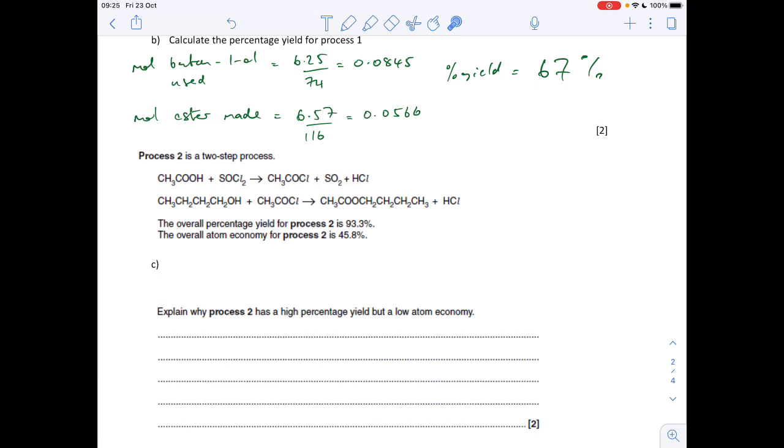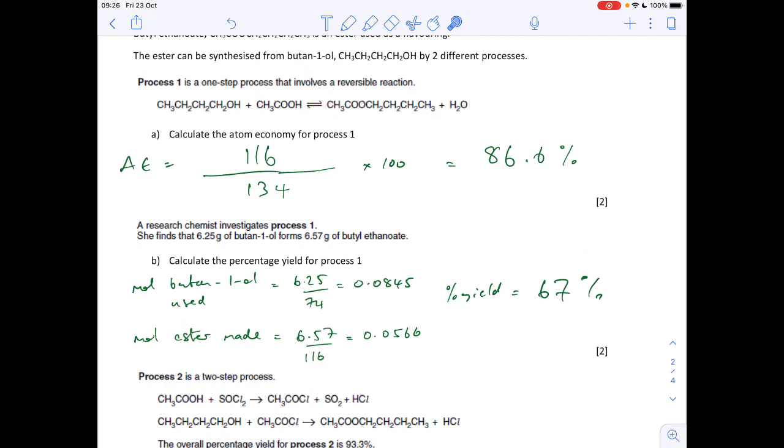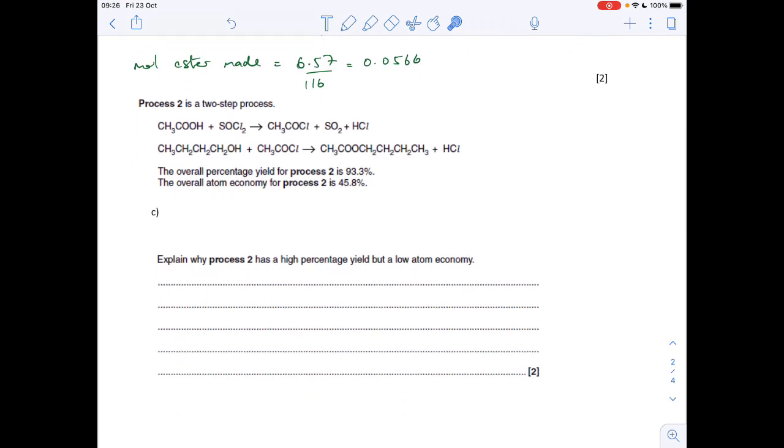Part C: process two is a two-step process. We've got the equations there, overall percentage yield 93.3 percent, so very high. Atom economy process two: 45.8 percent, so quite low. Why we've got a high percentage yield: the reactions aren't reversible. In process one we had a reversible reaction that drops the percentage yield, whereas in process two these are all one direction reactions. The atom economy for process two is lower because we're making lots of waste products.